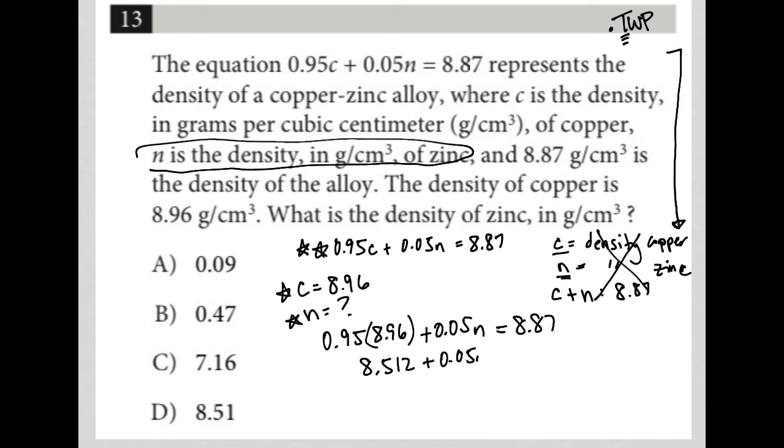I'm adding that again to 0.05N equals 8.87. Of course, I can subtract this from both sides now, and I'm left with 0.05N is equal to...